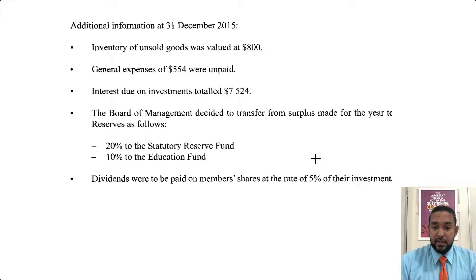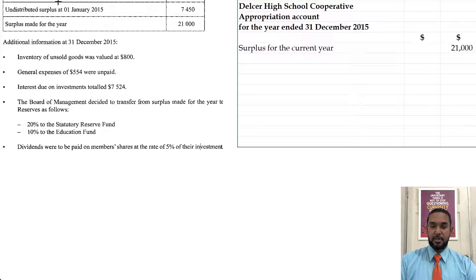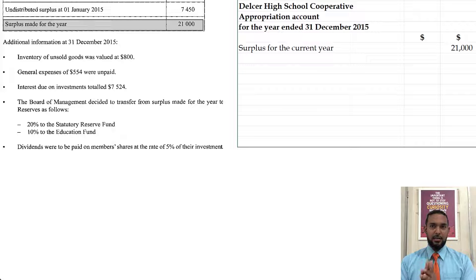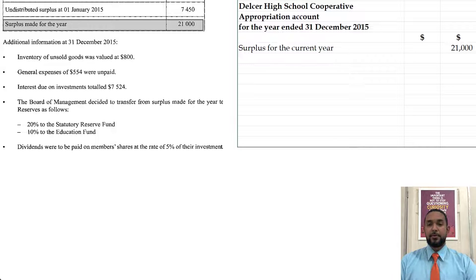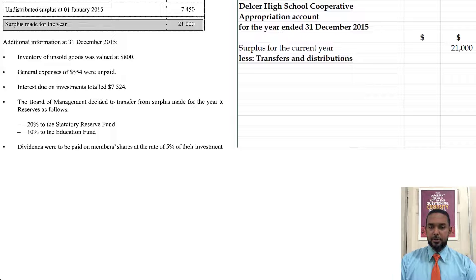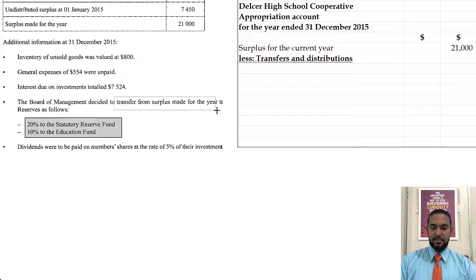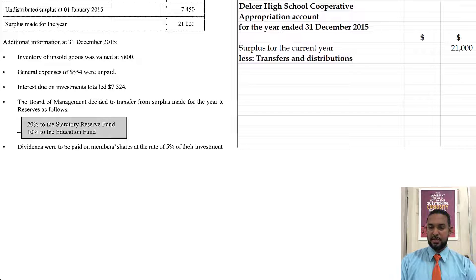We have a few things to do here and they want us to first do the appropriation account. So we're going to start off with the surplus for the year of $21,000. Now usually I used to add my undistributed surplus brought forward, but I've since spoken to other teachers and students who say we should probably leave that at the end. It depends on the question, but for now I'm just going to do the appropriations, then add the undistributed surplus at the end. So let's do transfers and distributions — we have two.